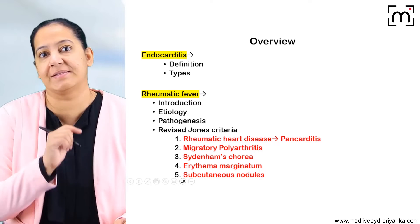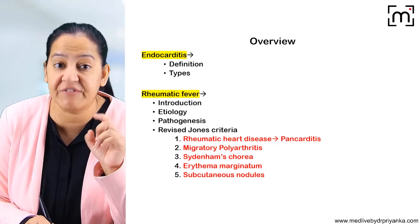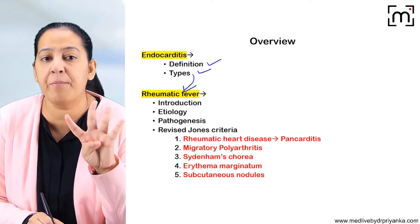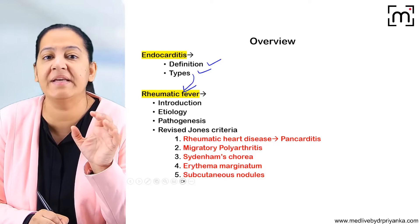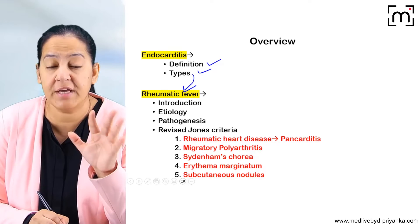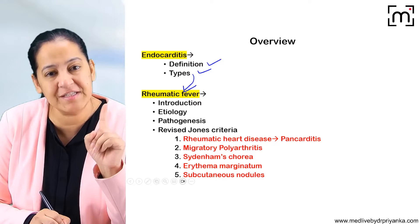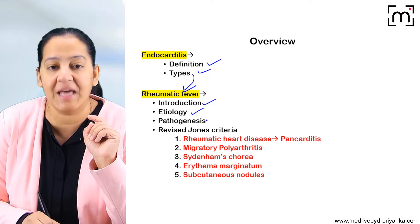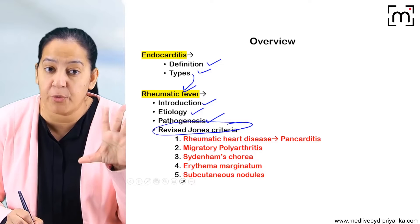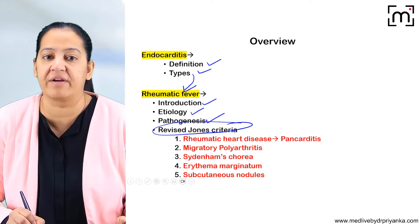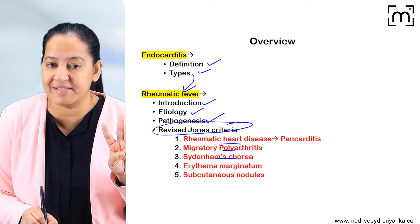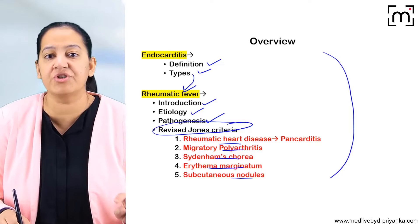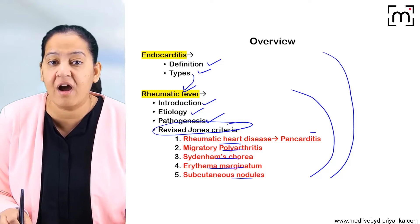Let me give you an overview of the headings under which I am going to discuss this topic. First, I will give you the definition of endocarditis, then we will see the various types. One important type is rheumatic fever. There are four important types of endocarditis. For rheumatic fever, we will cover: introduction, etiology, pathogenesis, and the revised Jones criteria — the five major criteria: rheumatic heart disease, migratory polyarthritis, Sydenham's chorea, erythema marginatum, and subcutaneous nodules.